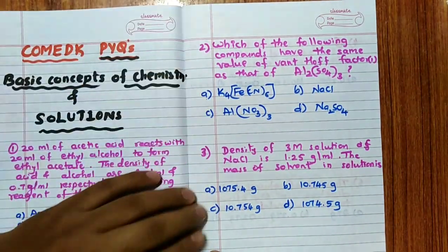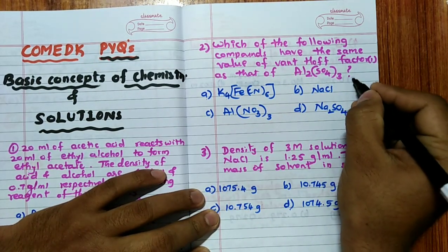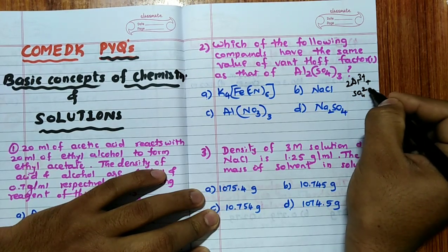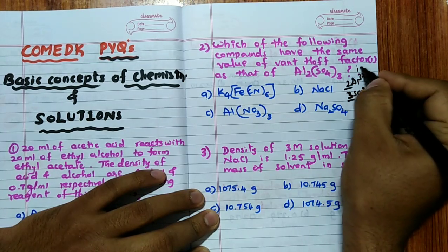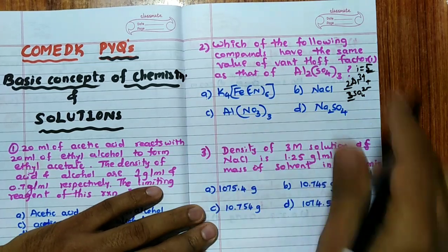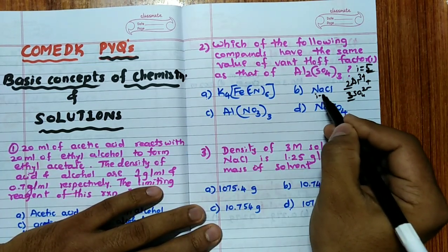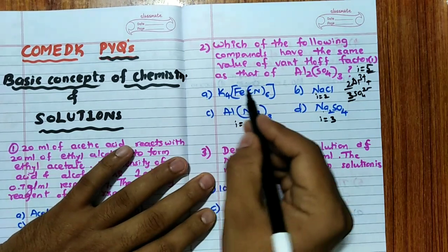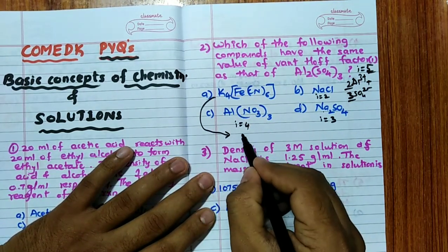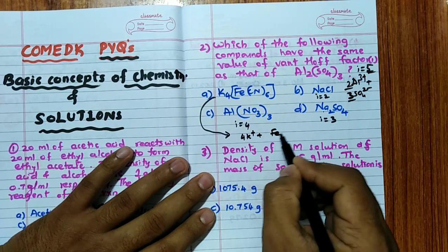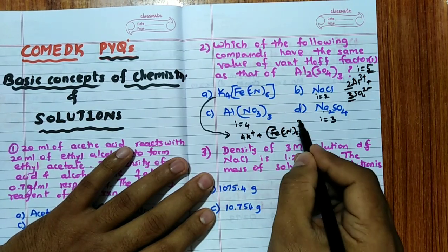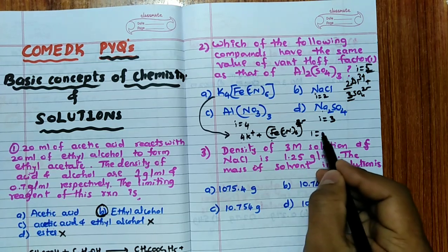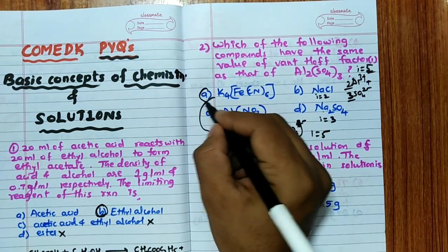Next question: which compound has the same van't Hoff factor (i) as Al₂(SO₄)₃? Al₂(SO₄)₃ dissociates into 2Al³⁺ + 3SO₄²⁻, giving i = 5. For K₄[Fe(CN)₆], it dissociates into 4K⁺ + [Fe(CN)₆]⁴⁻, also giving i = 5. So the answer is A.